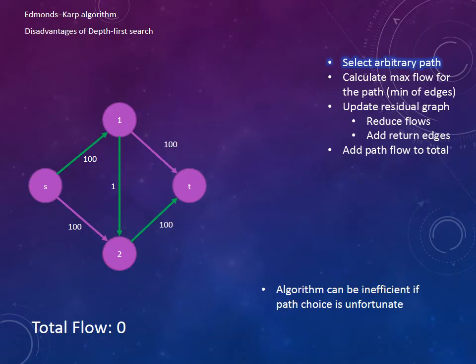Again, we are going to select a path from source to sink, but now notice it is an arbitrary path, not the shortest path like before. Now we calculate the maximum flow of our selected path and then update the residual graph with the new capacities. And of course add the return edges of 1. Now we update the total flow.